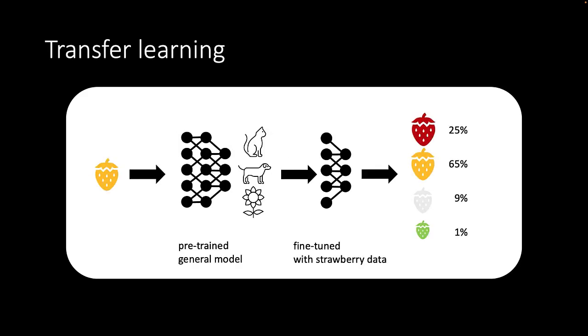With transfer learning you do it slightly differently. We will use the outcome of the pre-trained general model, the MobileNet. We feed a strawberry image into this MobileNet and take the outcome of the final layer of the neural network.